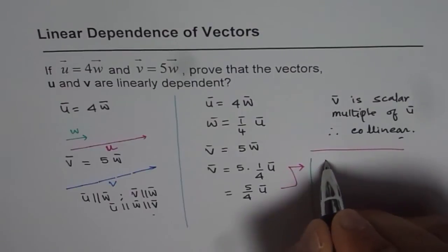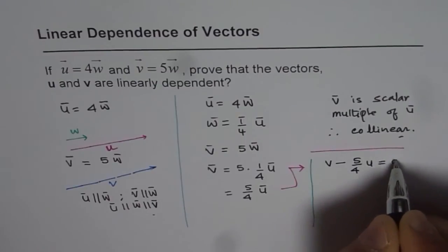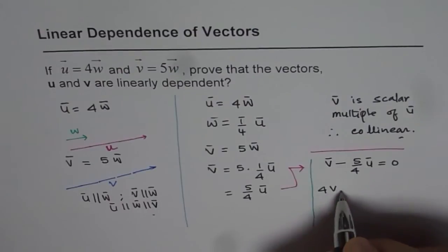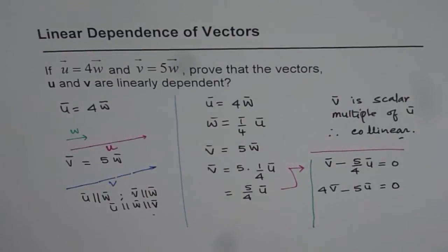What I will do now is write this as v minus 5/4 u equals 0, or I could write 4v minus 5u equals 0. You could write this as a linear combination, a combination of linear equations.